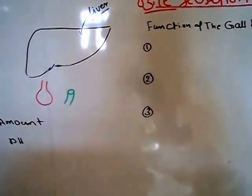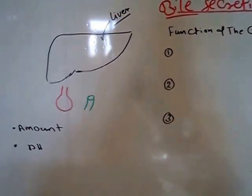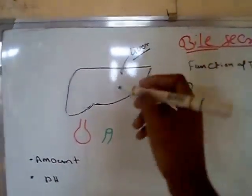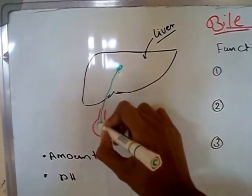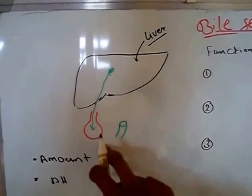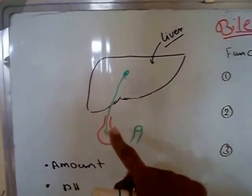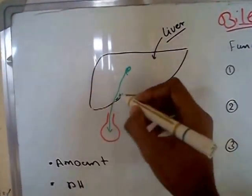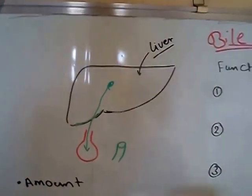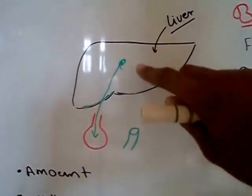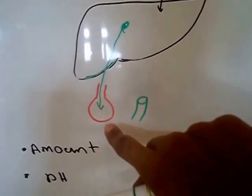Hi, today I will talk about bile secretion. The liver secretes bile from here, and this bile will be stored in the gallbladder, which is here. In real life the gallbladder is attached to the bottom of the liver — for demonstration purposes I will put it here. So this is the bile produced in the liver, which will then be stored in the gallbladder.